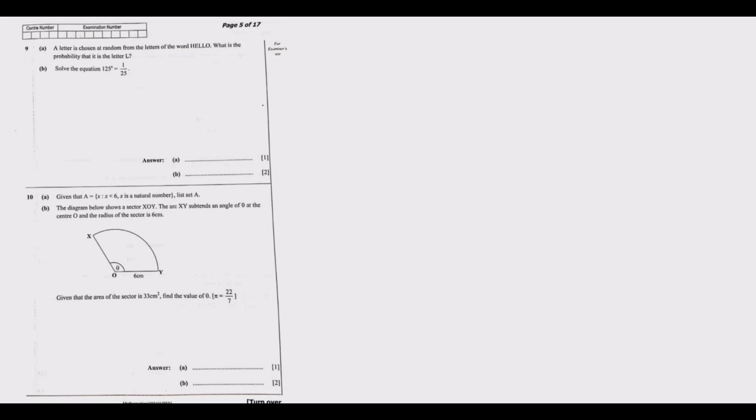Question 10a: We need to list a set A, where x is less than 6 and x is a natural number. We need to understand what natural numbers are. Natural numbers are basically the numbers that we use for counting and ordering. Whole numbers include zero, while natural numbers don't include zero. When you talk about natural numbers, we start with one, two, three, four. We are saying x is less than six, so the last number which is less than six is five. So this is the list of natural numbers: {1, 2, 3, 4, 5}.